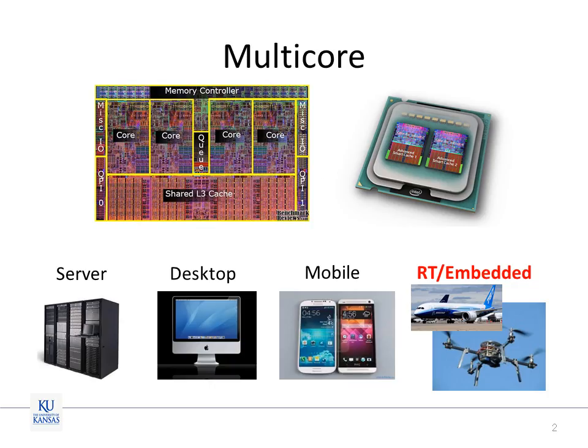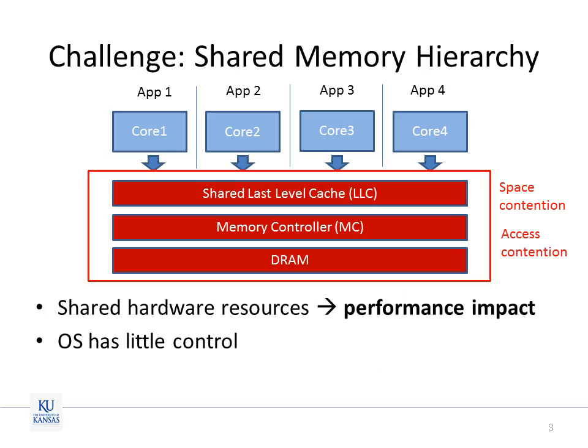Multicore processors are used in every category of computer systems these days, including real-time embedded systems where predictable performance is highly desirable. However, the challenge is that when we consolidate multiple applications on a single multicore processor, contention in shared hardware resources can significantly alter timing behaviors of the applications. This is especially problematic for real-time embedded systems where worst-case performance must be guaranteed.